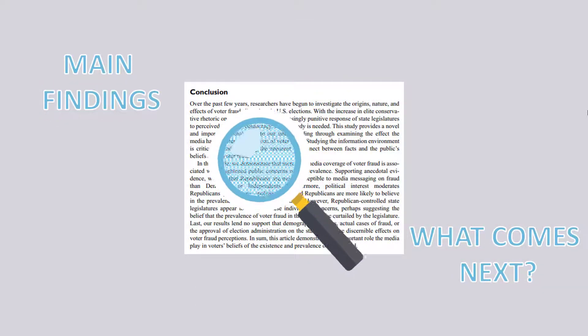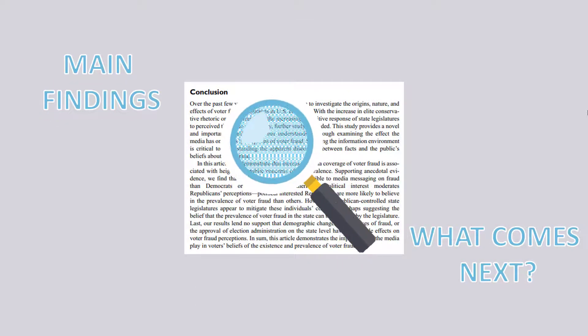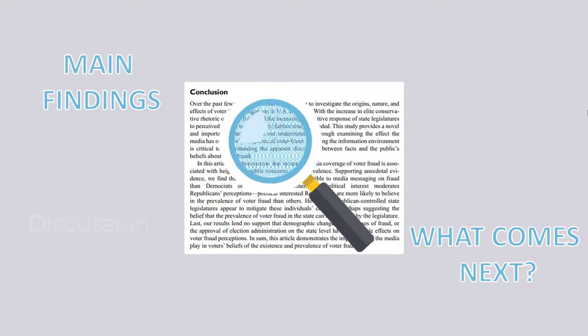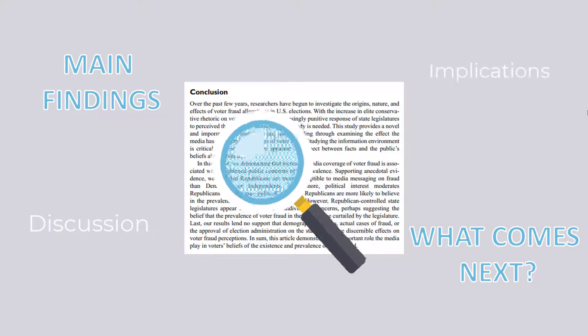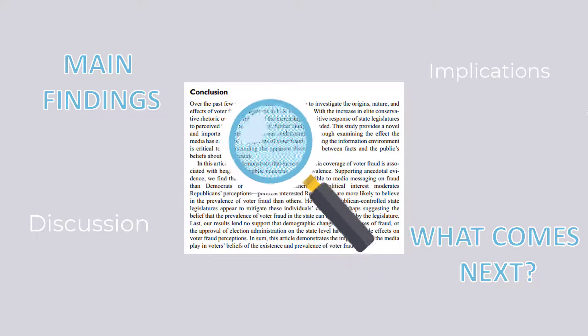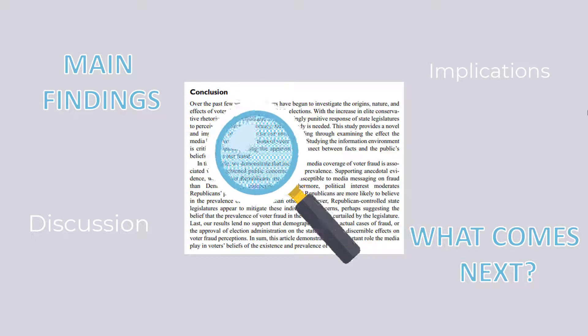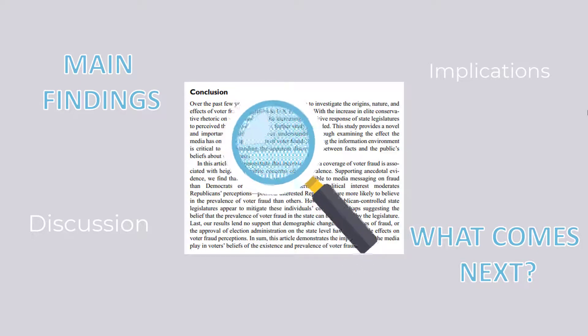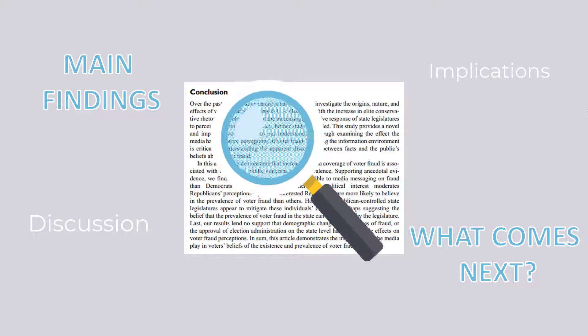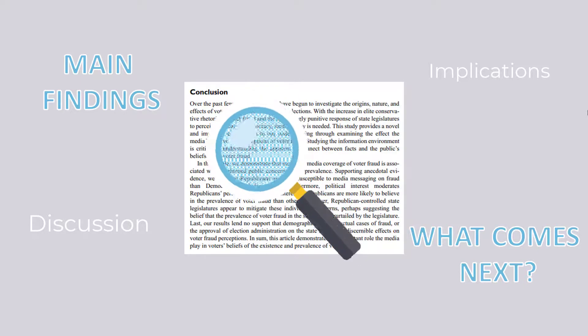Then, read the conclusion to see what the authors found. The discussion and implications sections are also helpful to read if the article has those sections. They can help you make sense of the author's research and its importance.